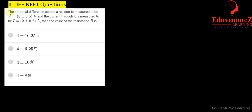Hello students, so here is a question which says the potential difference across a resistor is measured to be V equals 8 plus minus 0.5 volt, and the current through it is measured to be I equal to 2 plus minus 0.2 ampere. Then the value of resistance R is. Okay, so this is a question...